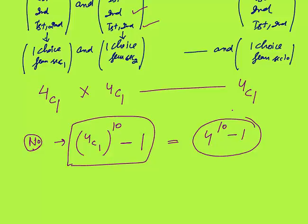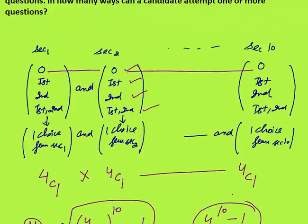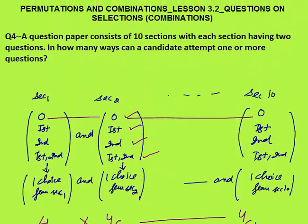So that was all about permutation and combination lesson 3.2 — questions on selection. Thank you.